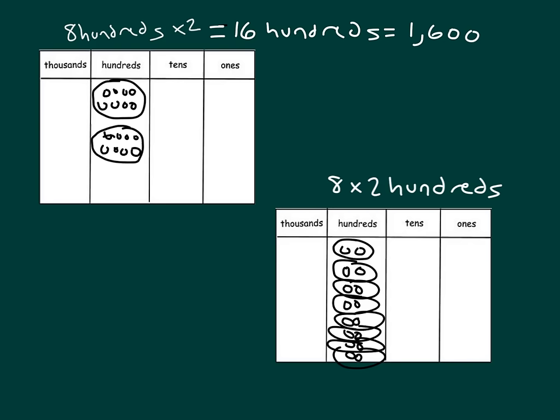Seven and eight. Count with me. 2, 4, 6, 8, 10, 12, 14, 16. I was counting by 2s there. Or 16 hundreds. 8 times 2 hundreds does equal 16 hundreds. And 16 hundreds, just as before, equals 1,600.